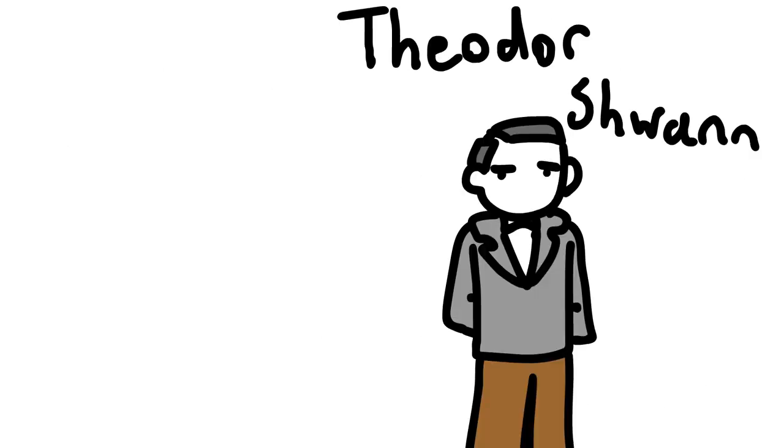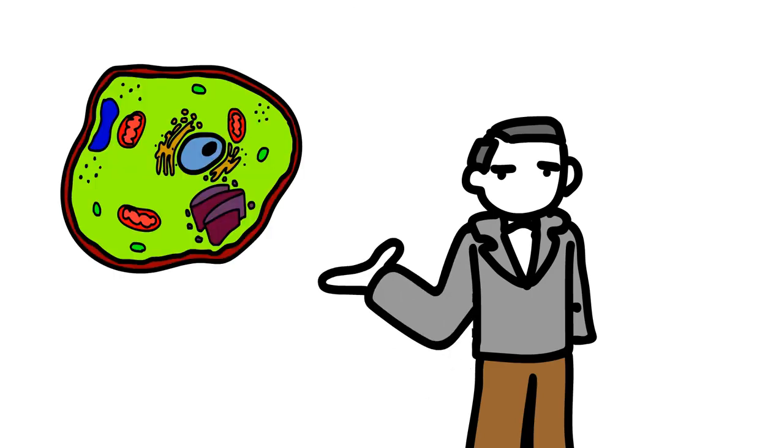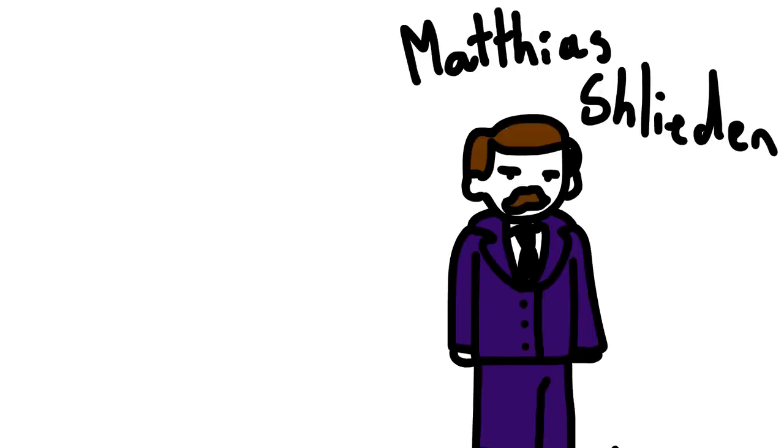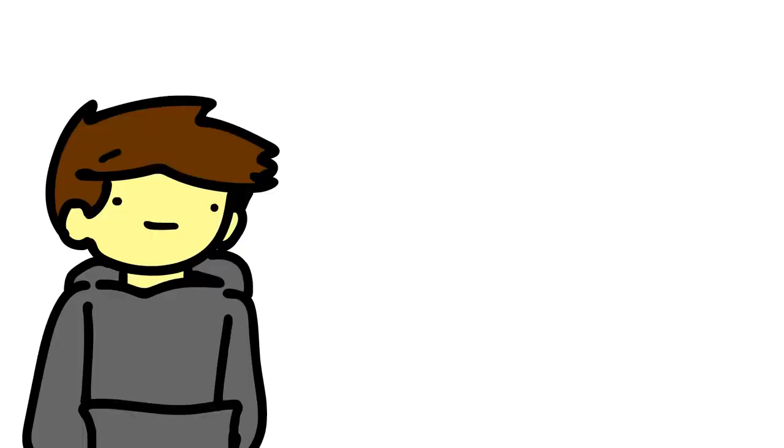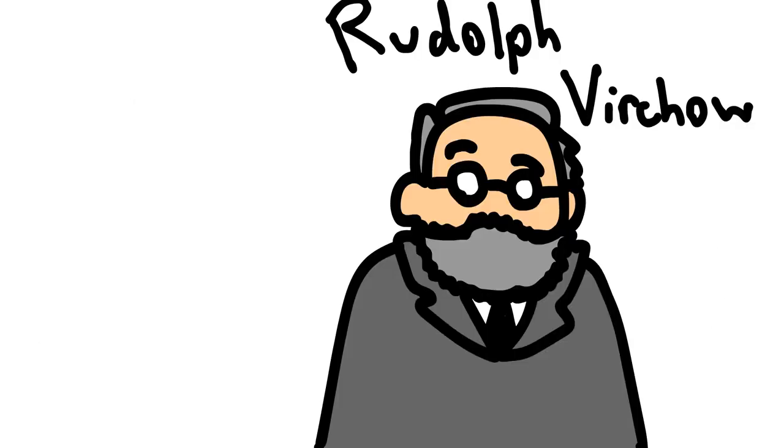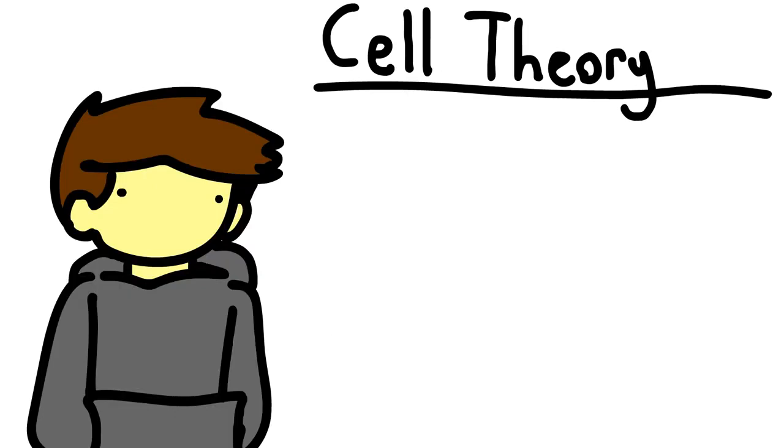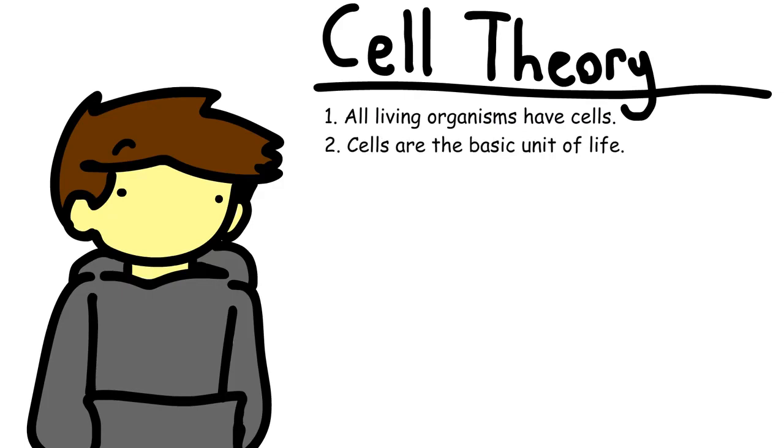In 1839, Theodore Schwann took upon the observations of an animal cell, and Matthias Schleden worked on plant cells. And the two German scientists came together to make the cell theory, along with Rudolf Virchow, who people barely credit for the theory anymore. Sad, right? Well, these three scientists stated that all living organisms are composed of one or more cells, the cell is the basic unit of structure and organization in organisms,